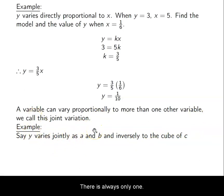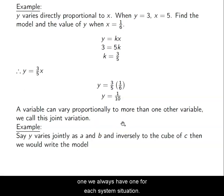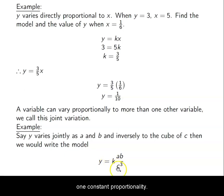There is always only one constant of proportionality. We never have more than one. We always have one for each situation. So if we want to make this model, it looks like the following. One constant of proportionality. A and b in the numerator, c cubed in the denominator. The cube of c means that c is cubed in the denominator.